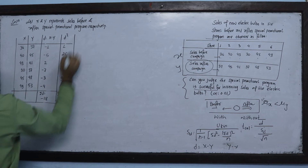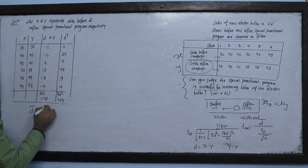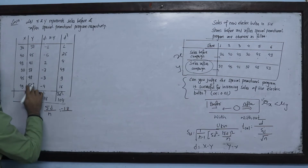D-squared equals 104. D-bar equals summation D upon n = −18 upon n, where n = 6.